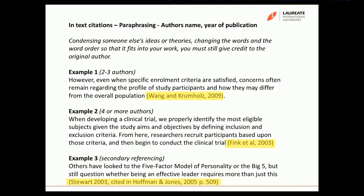In example two, when there are four or more authors — which sometimes occurs, especially with journal articles — you just put the name of the first author alphabetically, then the words 'et al', and then the year of publication. So here: Fink et al, 2003.